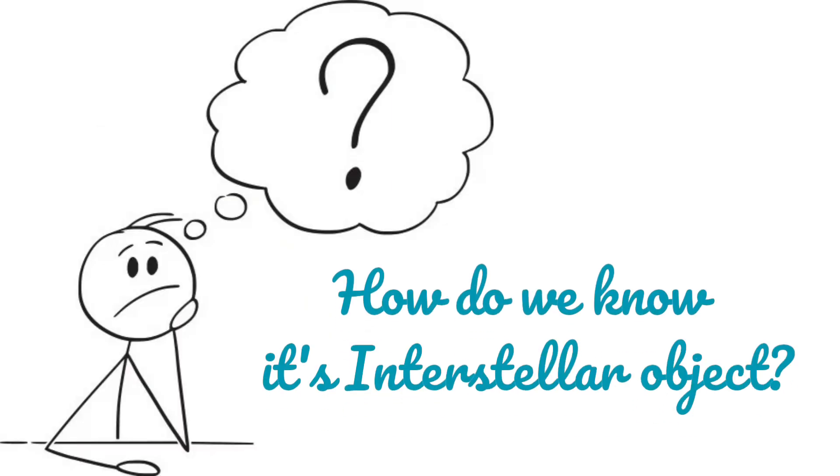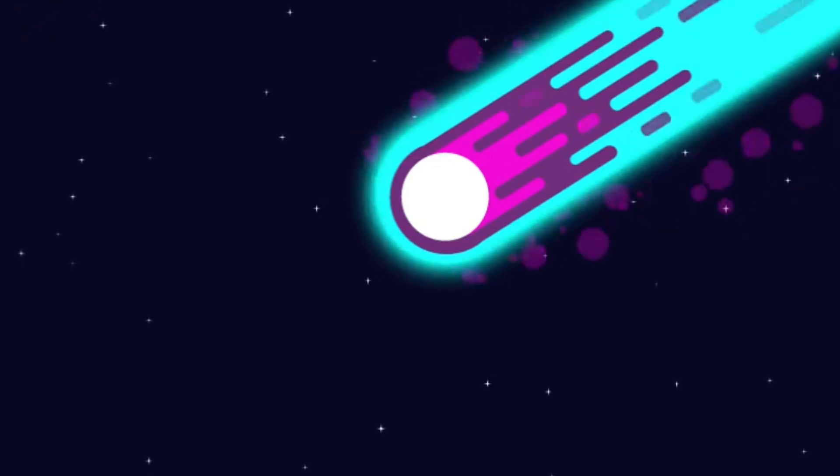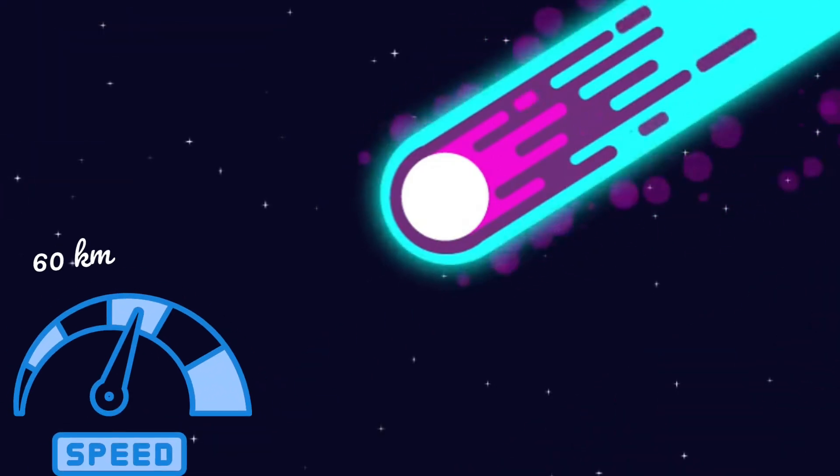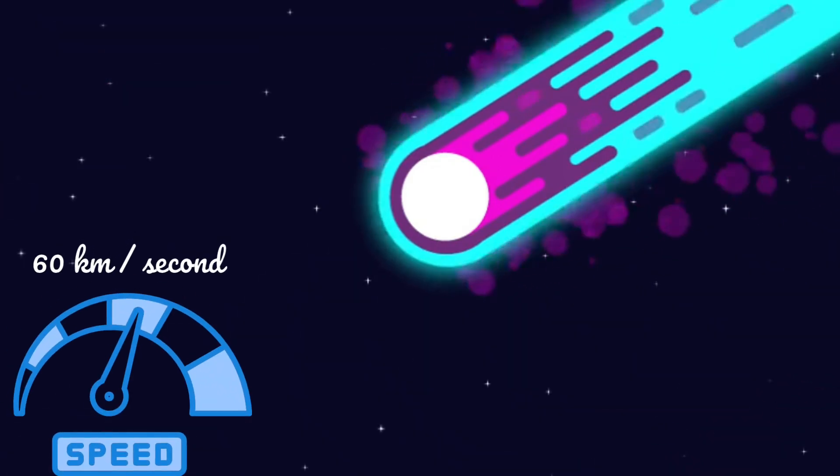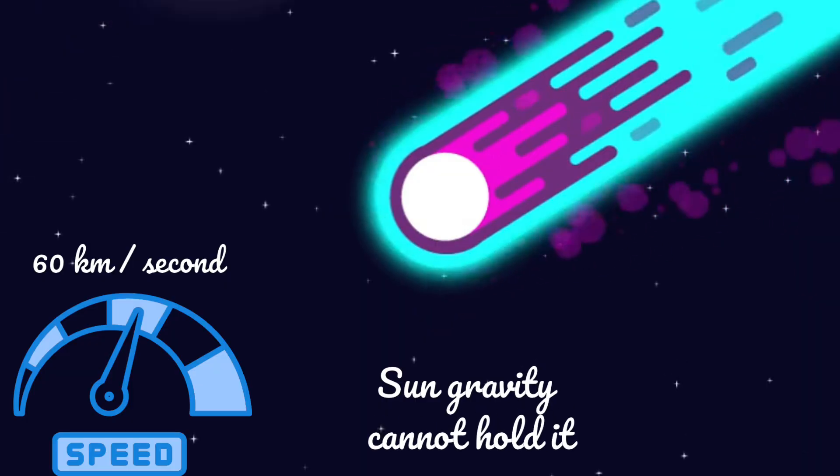So, how do we know it's interstellar? First, it's zooming at about 60 kilometers per second. That's so fast. Even the sun's gravity can't hold it.